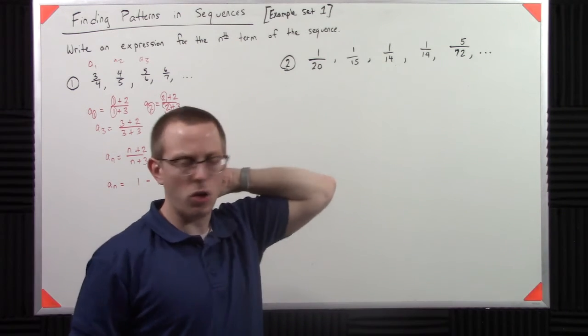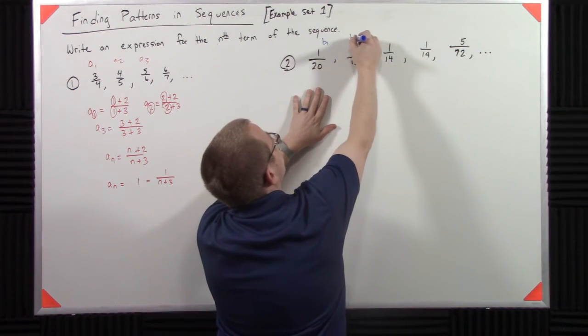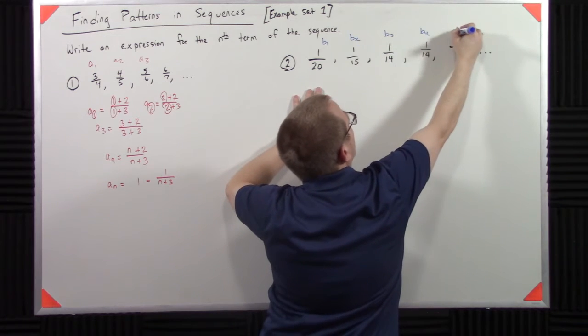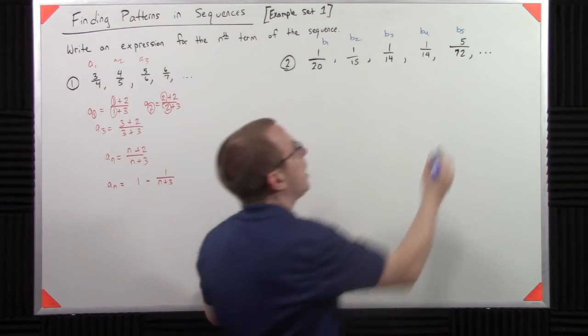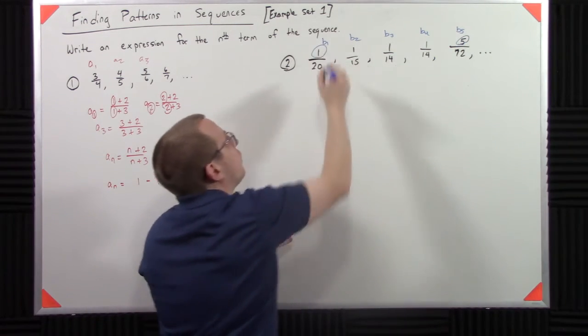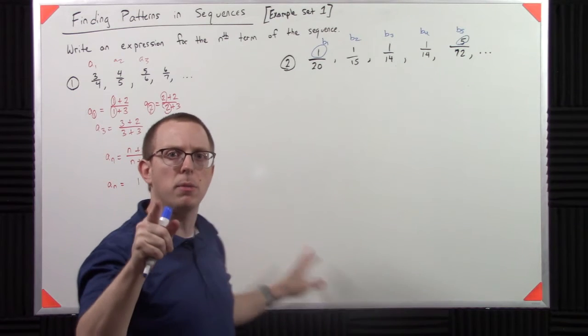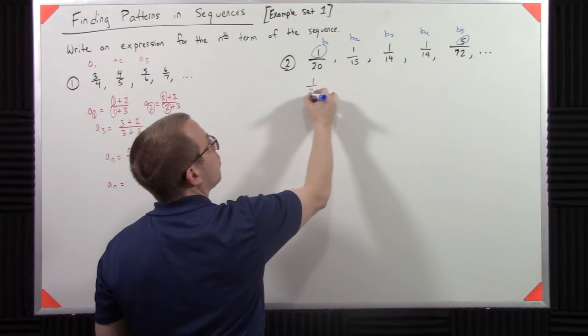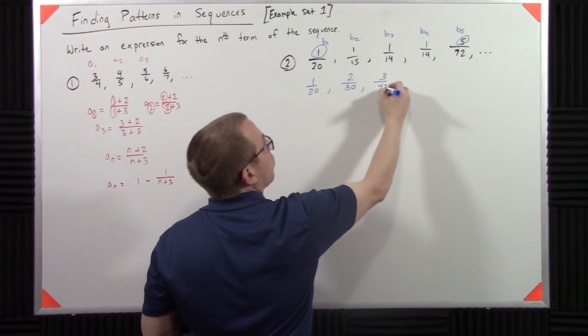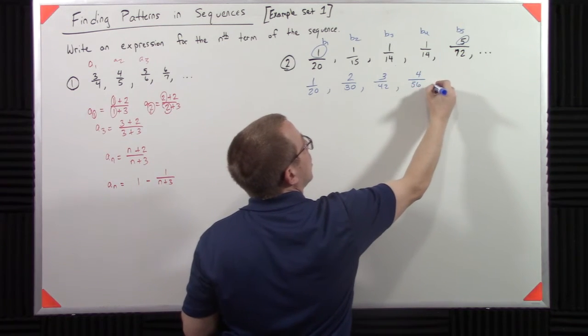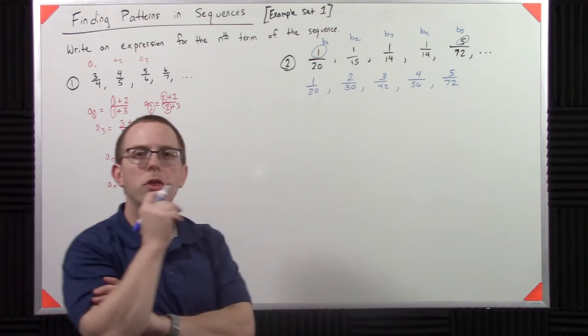Is there any way that I can turn this into, I know that's the fifth term, so if I call this B1, B2, B3, B4, B5. Now, what I notice is that the fifth term has a 5 and the first term has a 1. Now, the second, third, and fourth terms don't have a 2, 3, and 4, but I can make them have a 2, 3, and 4 because I can say, this is 1 over 20, this is 2 over 30, 42. 1 over 20, 2 over 30.